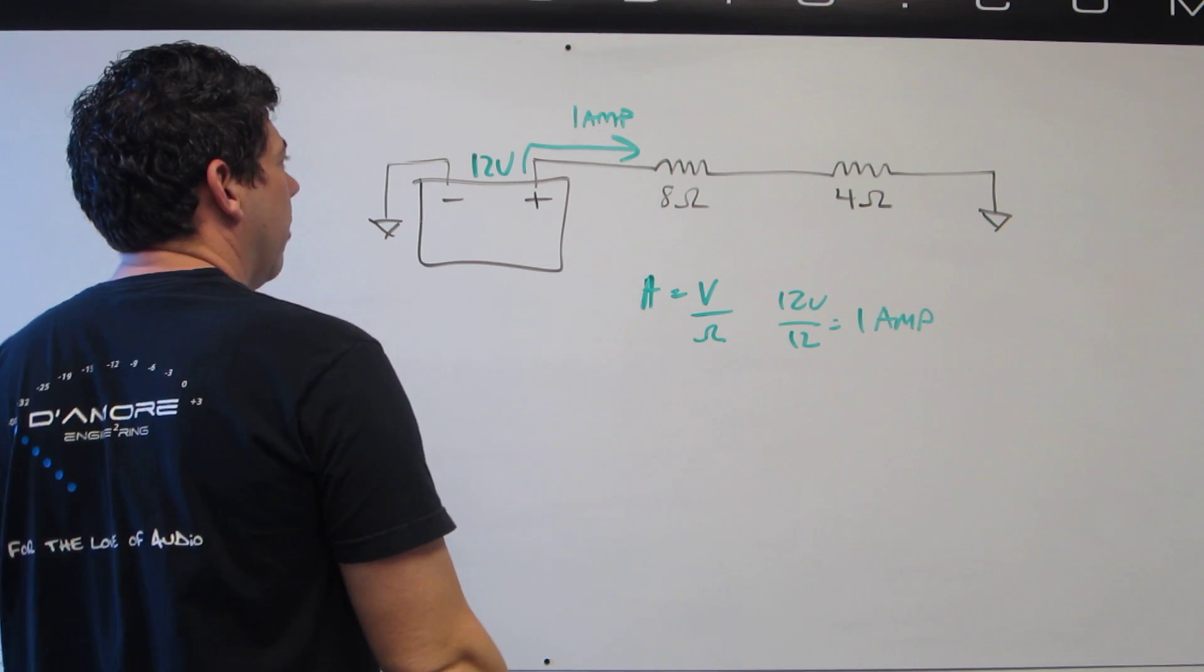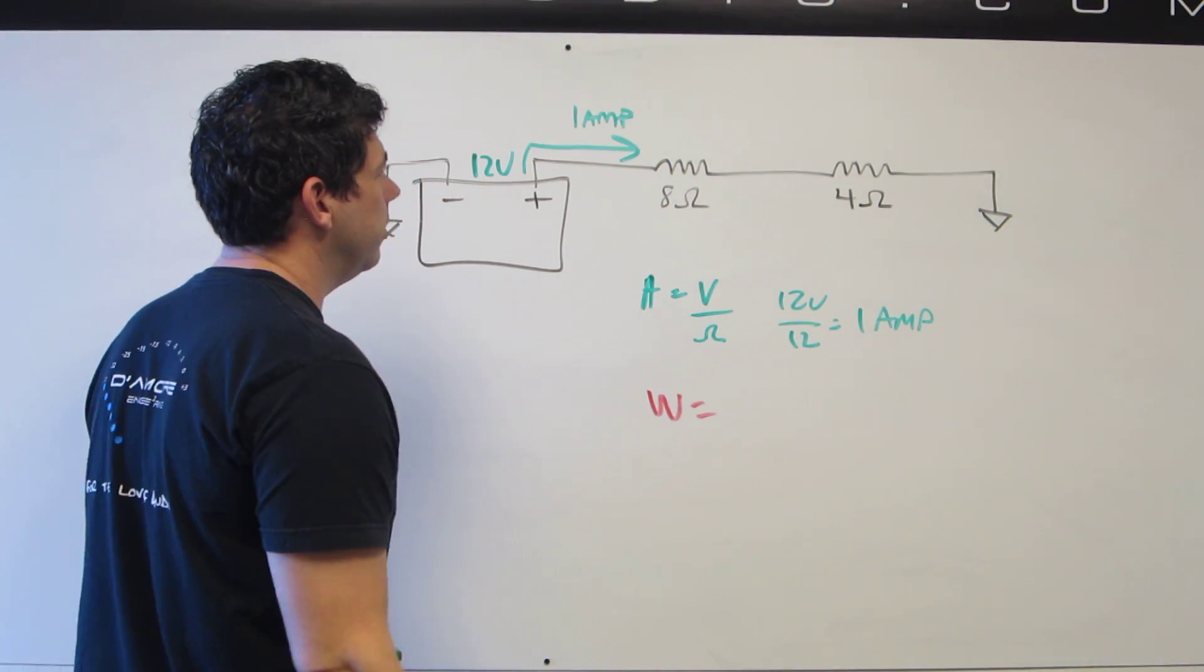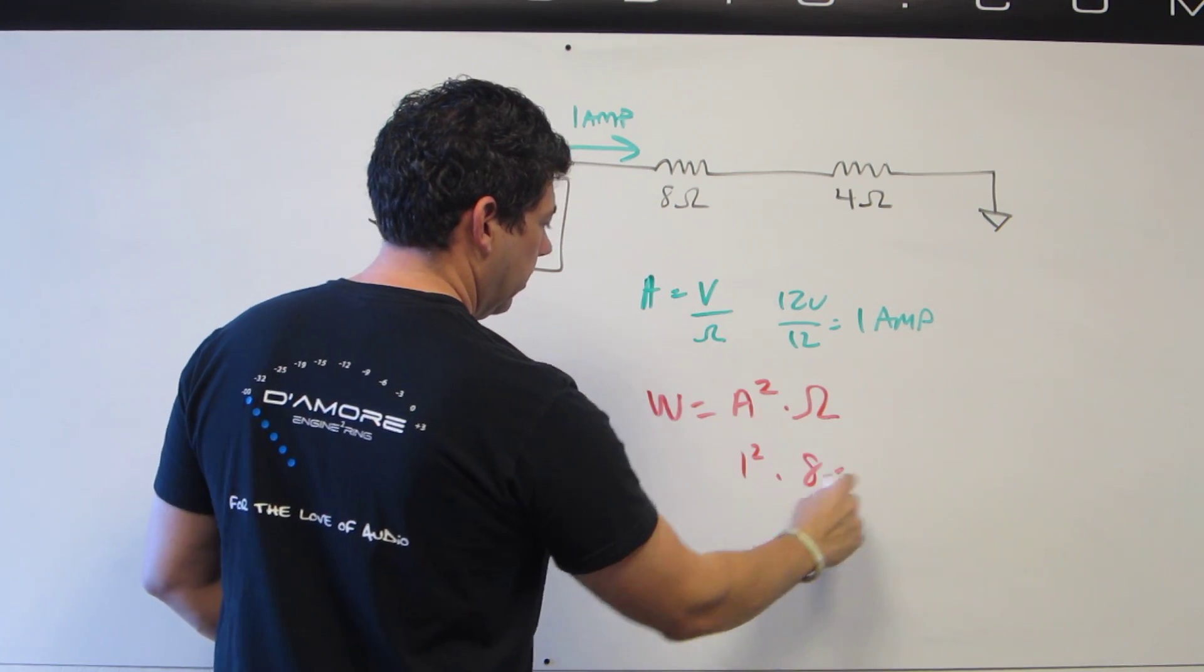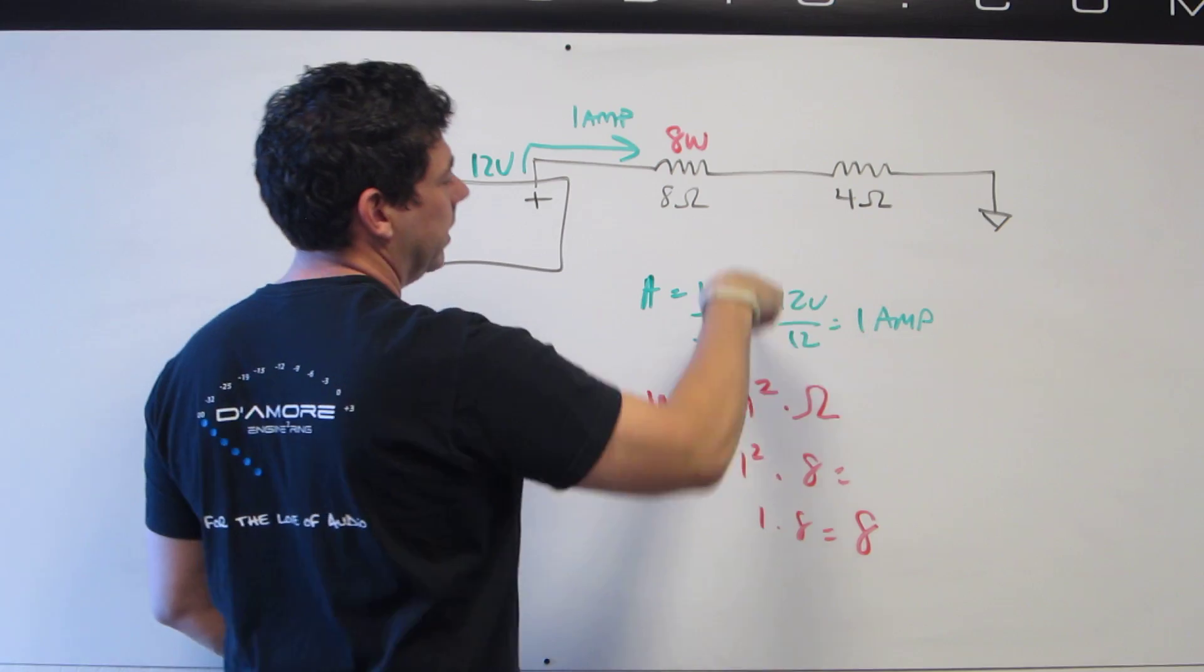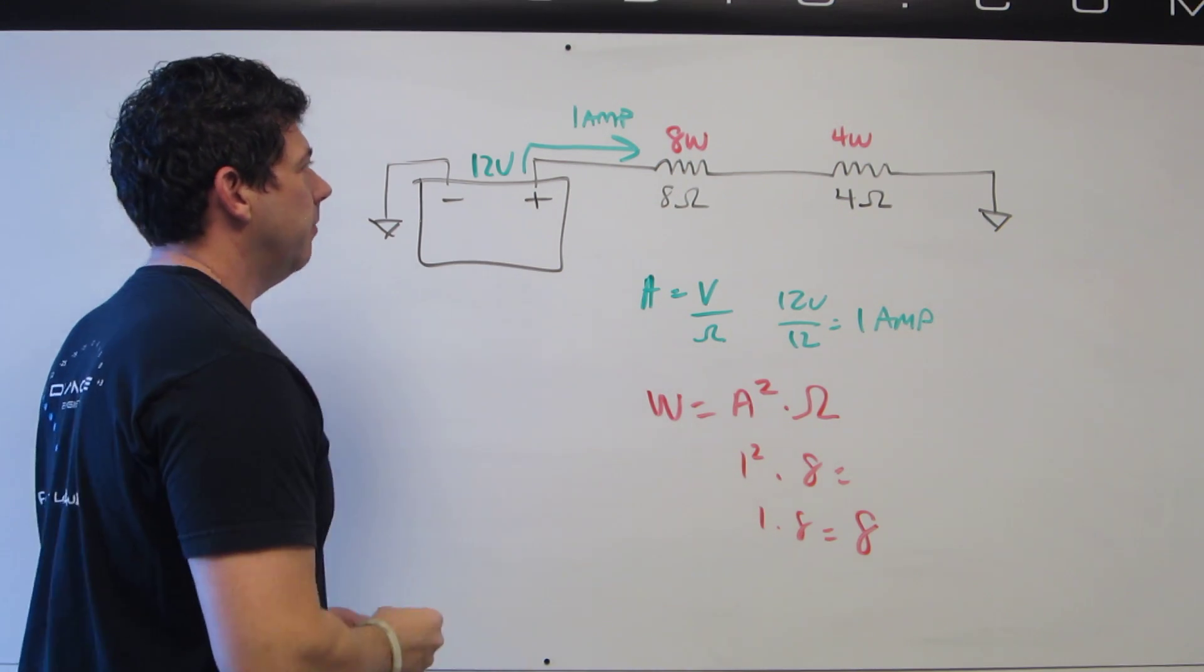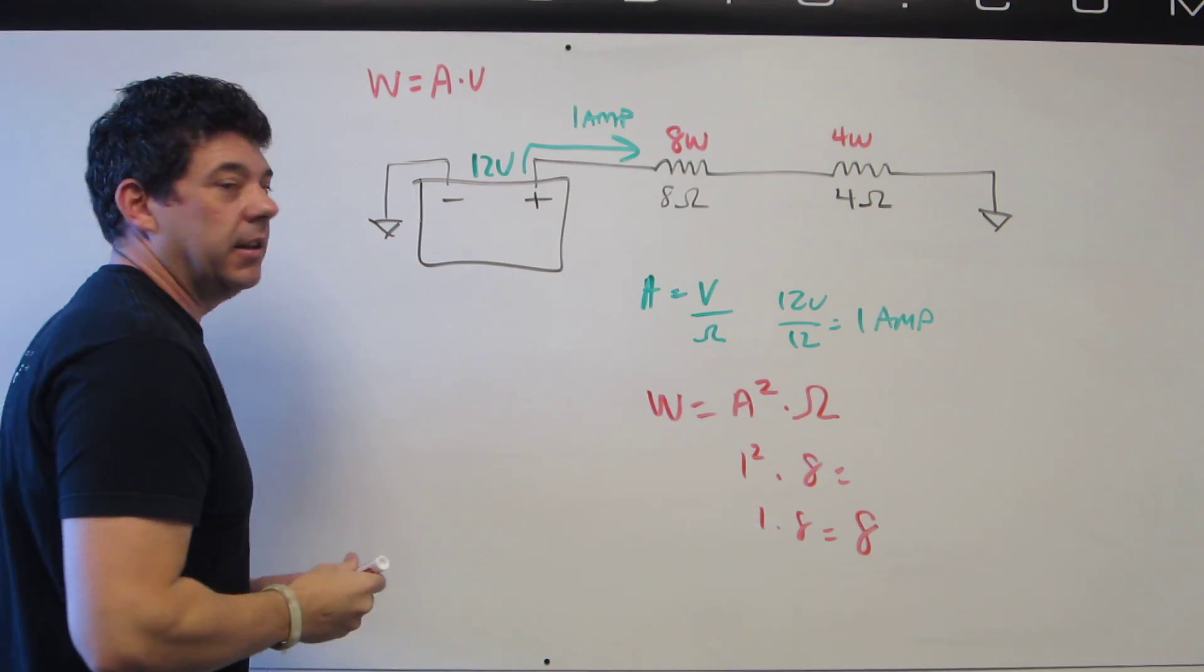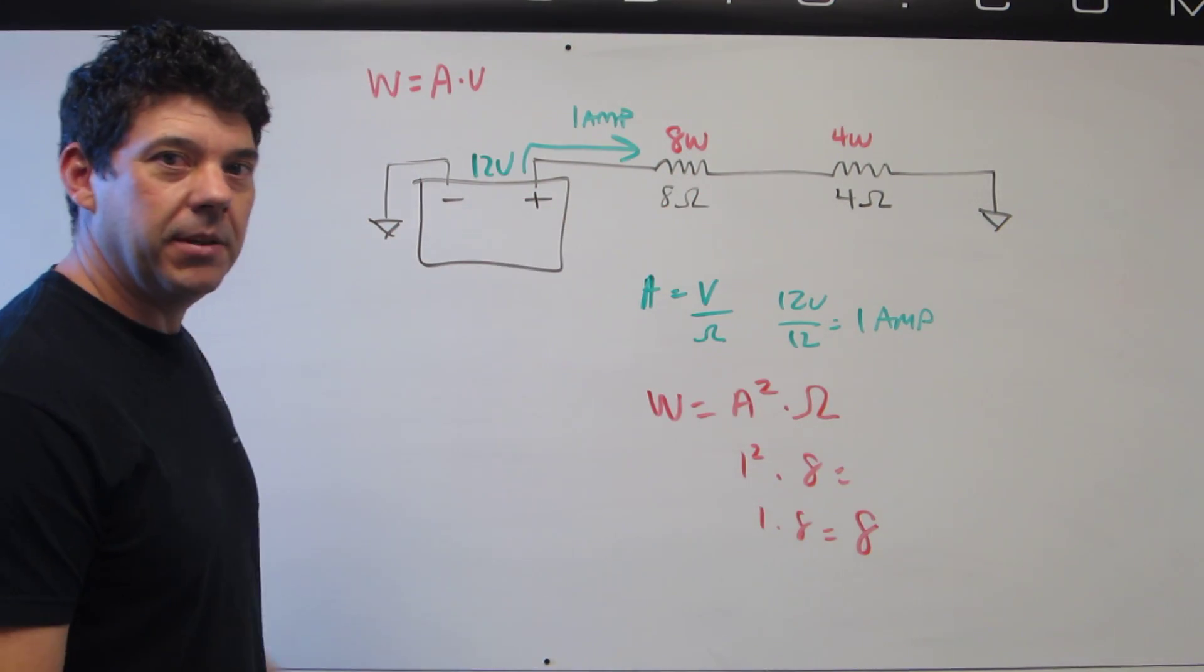Now the homework question was how much power is being dissipated in these resistors. The formula for that is current squared times the resistance. So for this one it will be 1 amp squared times 8 ohms, or 1 times 8. So this one has 8 watts of heat being dissipated, and this one has 4 watts. The total dissipation of the circuit is 12 watts, and we can see that makes sense because watts is also amps times volts. The total system here has 12 volts and 1 amp, so the battery is putting out 12 watts of power and it's all being absorbed here. If you got 8 watts and 4 watts and 1 amp, then congratulations, good job.